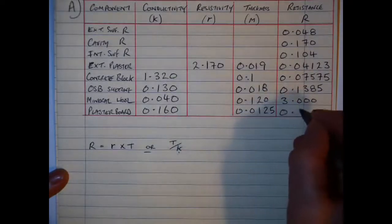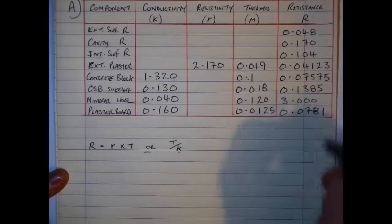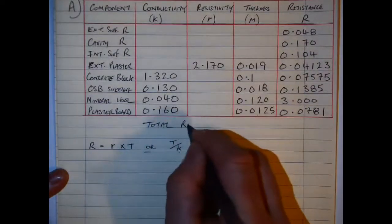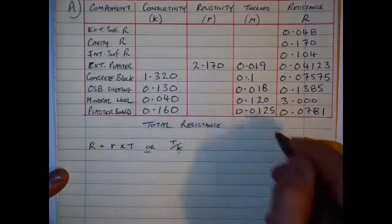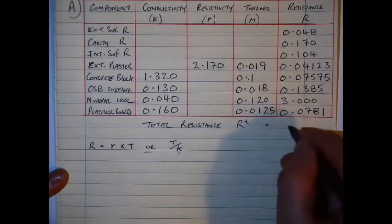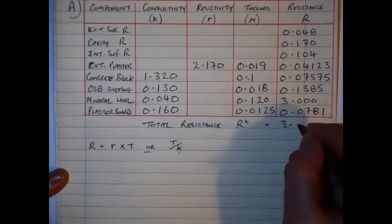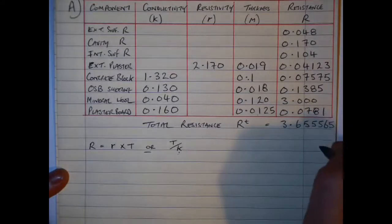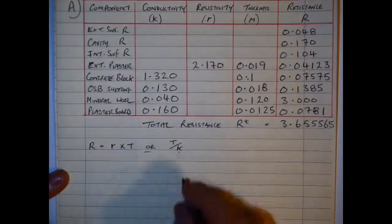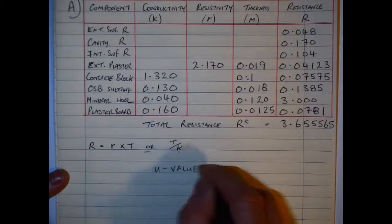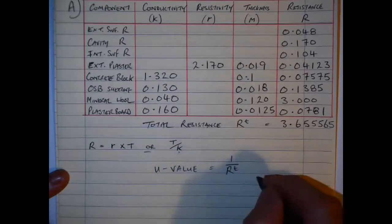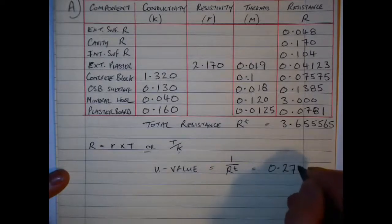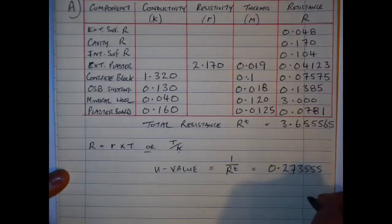Dividing thickness by conductivity gives the resistance value for each element. The mineral wool gives a very good resistance value of 3. When I add all of these up to get my total resistance, that is the first step towards my U-value. The total resistance comes in at 3.6555 — or to four decimal places, 3.6556. For the final part, we put 1 over the total resistance: 1 divided by 3.6555 gives a U-value of 0.2736.